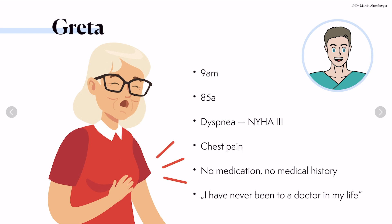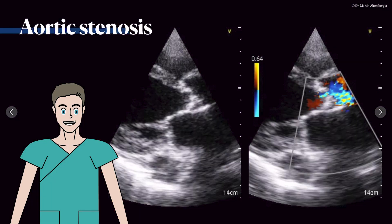Let me start with a case. It's Greta. Greta enters on a Sunday morning at 9am in the emergency department. She is 85 years old and has dyspnea when walking just a few steps, placing her in New York Heart Association class 3. She also complains of chest pain while walking. Overall she has no medication and no medical history, as she states she has never been to a doctor in her life.